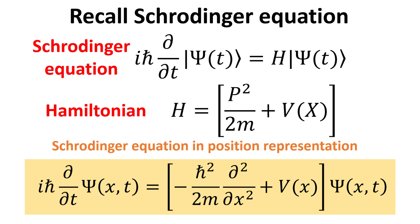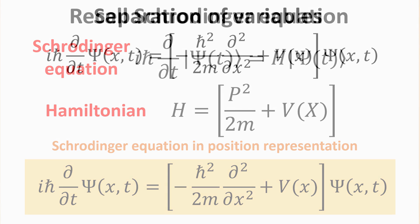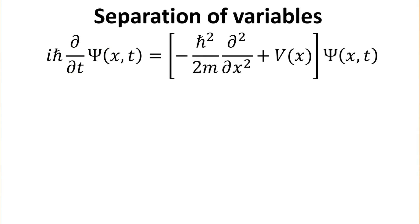Hence, the differential equation is set up such that it suggests the wave function big psi, which is a function of both time t and position x, is separable. The method of separation of variables is a common approach in solving partial differential equations of the form we just described.